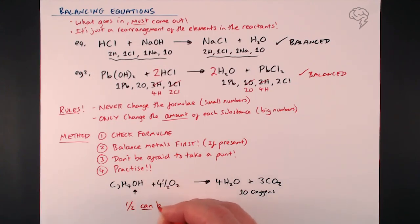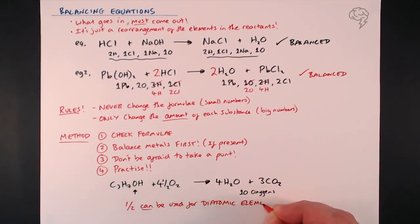Really importantly, and the last thing I will say here: halves can be used for diatomic elements. So if you've got O2, you've got H2, N2, Cl2, any halogens, then you can use half - four and a half, five and a half, just half.